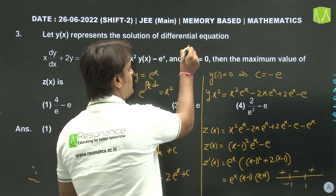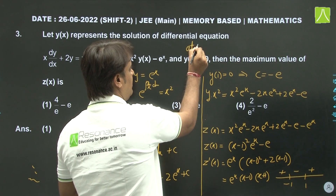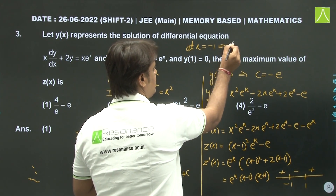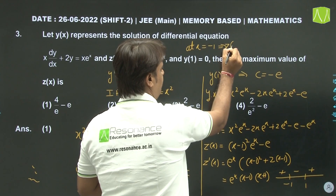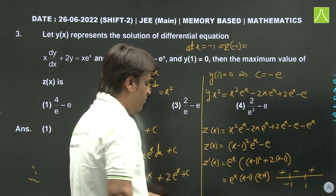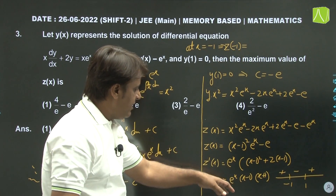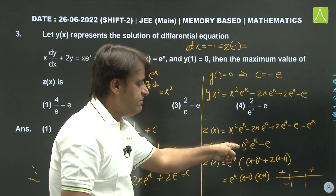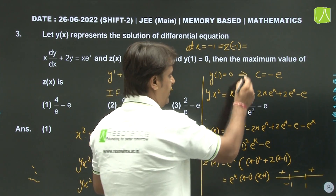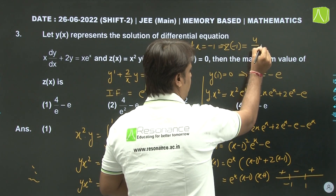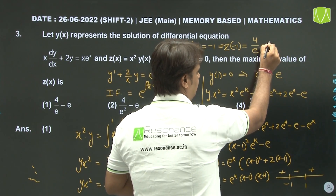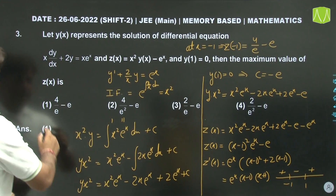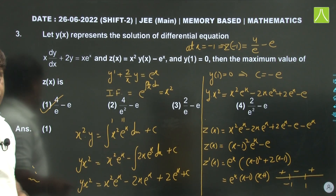At x = -1: z(-1) = (-1-1)² × e^(-1) - e = 4/e - e. So the maximum possible value is 4/e - e, and the first option is the correct option.